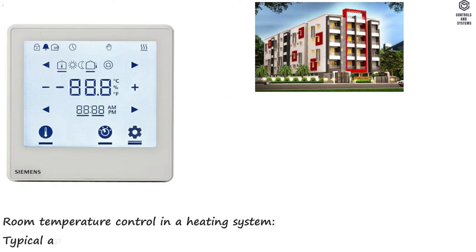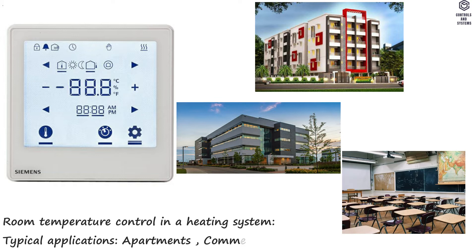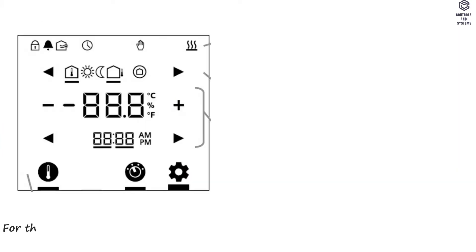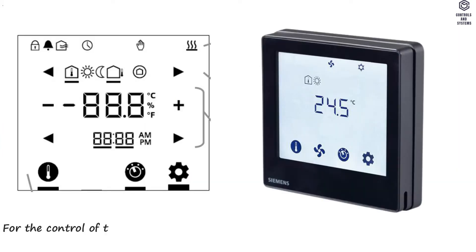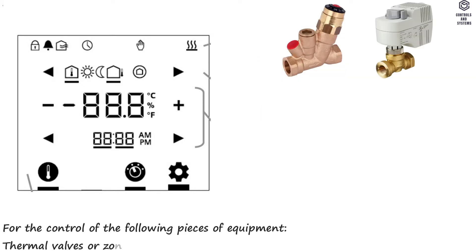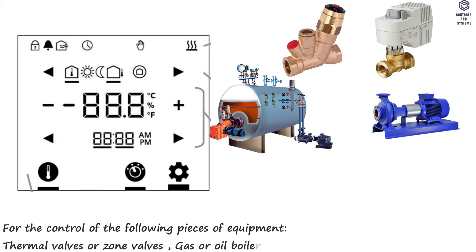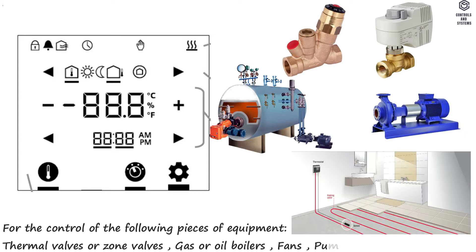Use: Room temperature control in a heating system. Typical applications include apartments, commercial buildings, and schools. For the control of the following pieces of equipment: thermal valves or zone valves, gas or oil boilers, fans, and pumps.